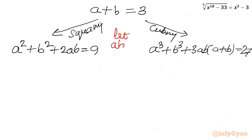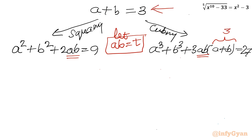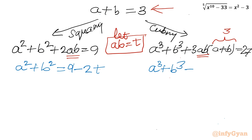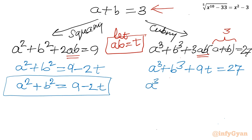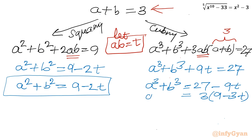Let us substitute t for ab. Then: a squared plus b squared plus 2t equals 9, so a squared plus b squared equals 9 minus 2t. And from the cubed expansion: a cubed plus b cubed plus 3t times 3 equals 27, so a cubed plus b cubed equals 27 minus 9t, or taking 3 common: 3 times (9 minus 3t).